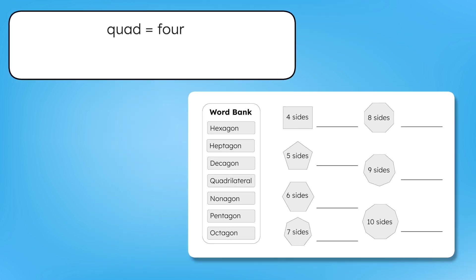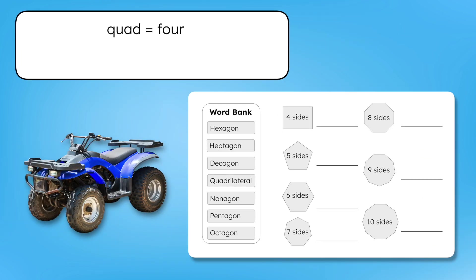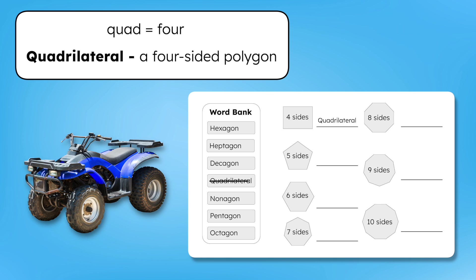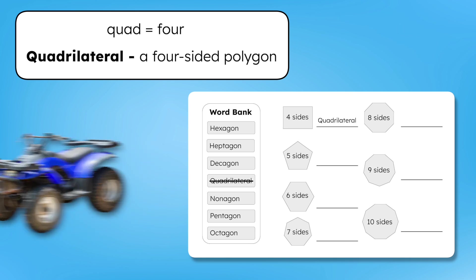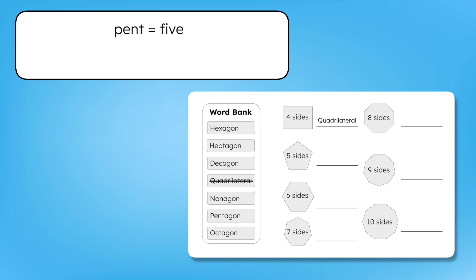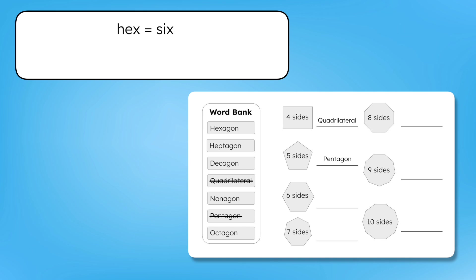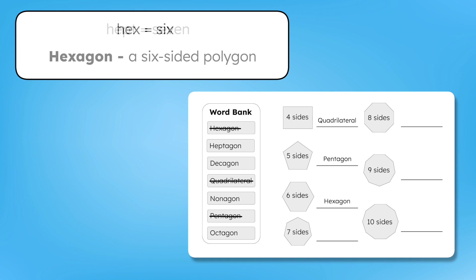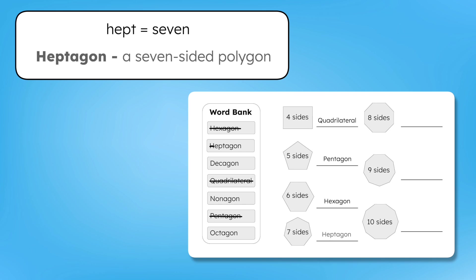The prefix "quad" means four, just like how a quad bike has four wheels, so a shape with four sides is called a quadrilateral. The prefix "pent" means five, so a five-sided shape is called a pentagon. "Hex" means six, so a six-sided shape is a hexagon. "Hept" means seven, so a seven-sided shape is called a heptagon.